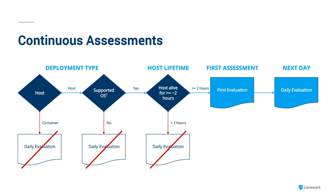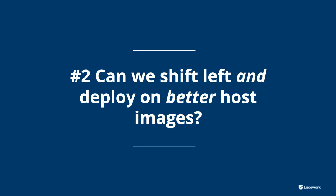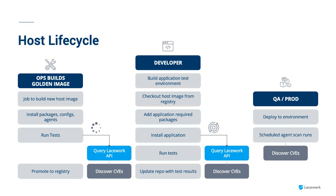Let's move now to the ability to shift left and deploy on better host images. One question we've seen is: in containers you can scan a registry, which often prevents vulnerabilities from making it into production, but what about hosts? Can we get to those vulnerabilities before they go into production? There are two different ways we see people using this. When we build an image — using something like HashiCorp Packer — when you add things like a logging agent or your Lacework agent, you also query the Lacework API. You provide your OS and your package manifest — what you have installed — and we compute in real time: here's what your vulnerabilities are before you've actually deployed this anywhere.